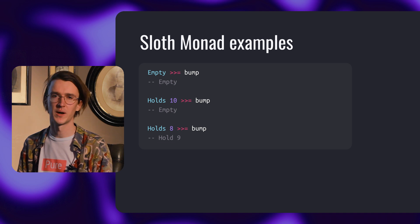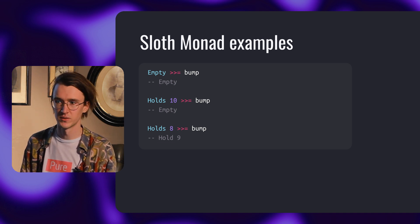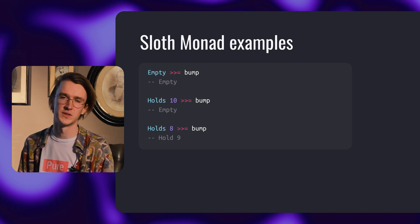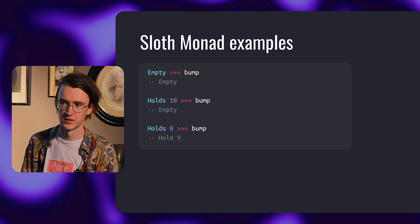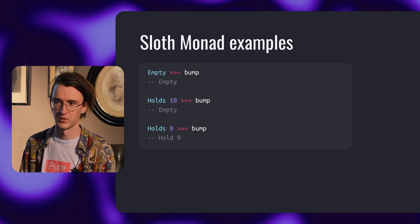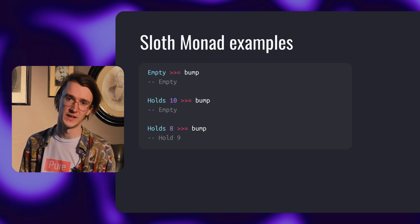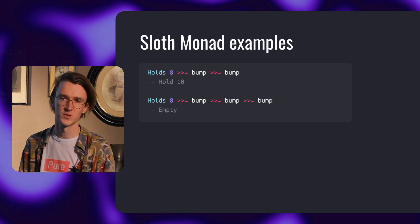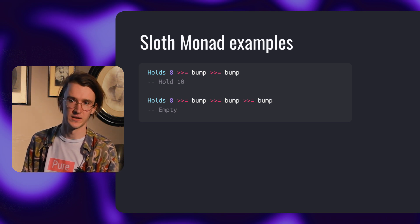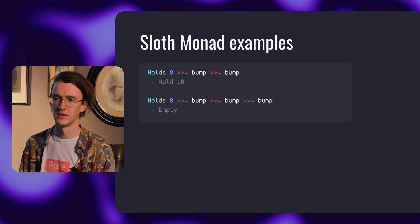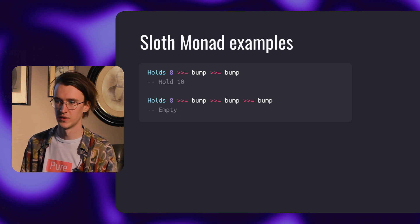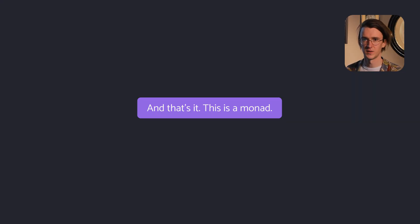Let's look at a couple of examples. If we try to bump the empty value, we get empty back. If we try to bump 10, we get empty too, because we get an overflow. However, if we bump an 8, we get a 9. And you can also chain these calls. If we bump an 8 twice, we get a 10. But if we try bumping it 3 times, we get empty, because we also get to the overflow again. And that's it — this is a monad.